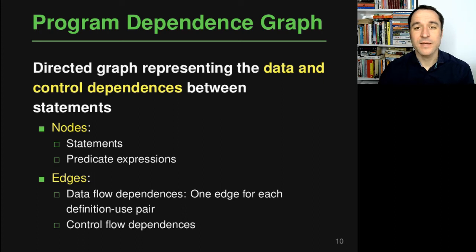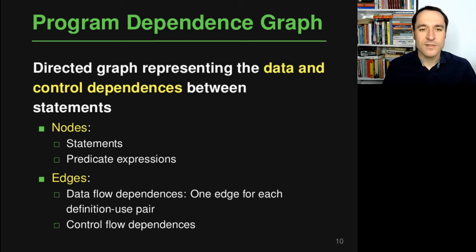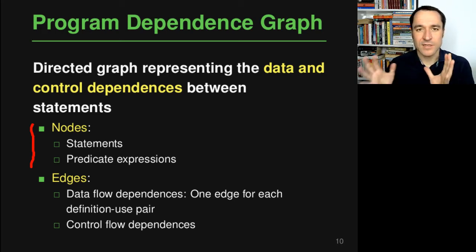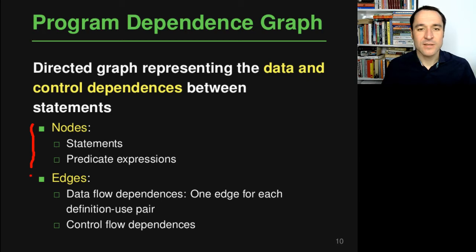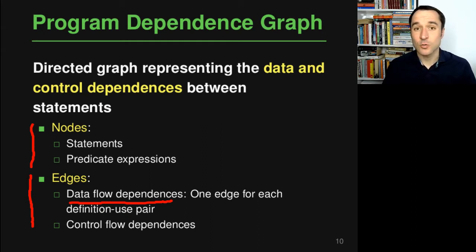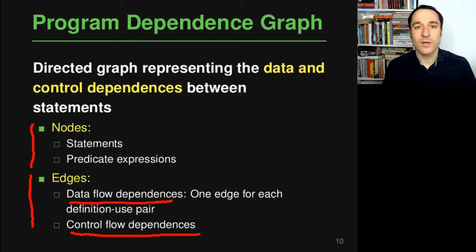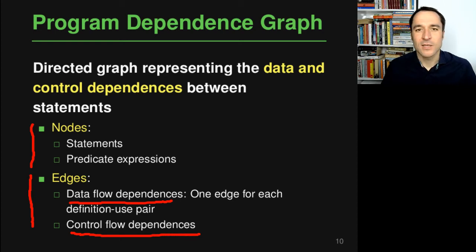Let's start by looking at what this program dependency graph actually is. A program dependency graph is a directed graph where the edges have a direction that represents the data and control flow dependencies between statements of a program. The nodes represent statements or predicate expressions — the boolean predicates that determine whether we take this or that branch. The edges can represent data flow dependencies, where a value written somewhere is read somewhere else, or control flow dependencies.